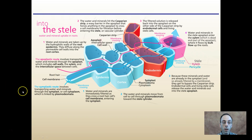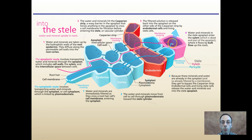First, we have the symplastic pathway. This involves transport of water and minerals through the symplast or cell cytoplasm, which is linked by plasmodesmata - literally holes within the cell walls. Following this pathway, we enter the cytoplasm of the cell and cross through the holes in the cell membrane, ultimately getting to our xylem. The symplastic pathway transports water and minerals through the cell cytoplasm.